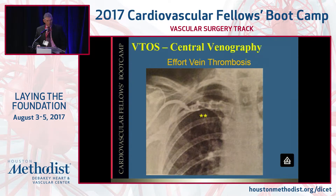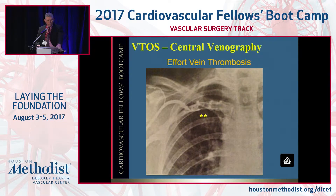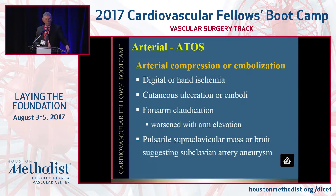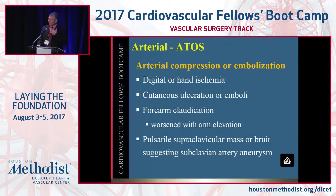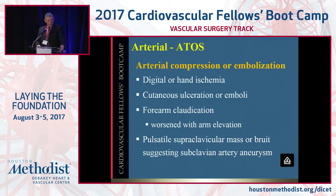Here's an example of a venogram showing a subclavian axillary vein thrombosis — somebody with effort vein thrombosis. How about ATOS, arterial compression? Digital or hand ischemia, continuous ulcerations, emboli, forearm claudication — it's worsened with arm elevation. You can get a pulsatile mass in the supraclavicular space, which represents a subclavian artery aneurysm or post-dilatation of the artery related to compression at the costoclavicular space.